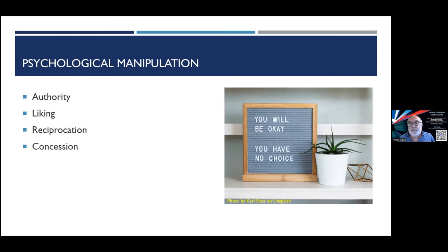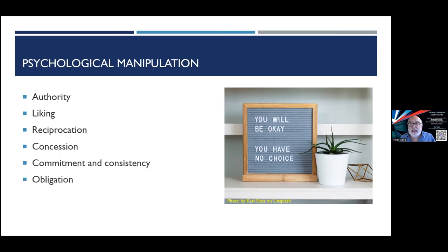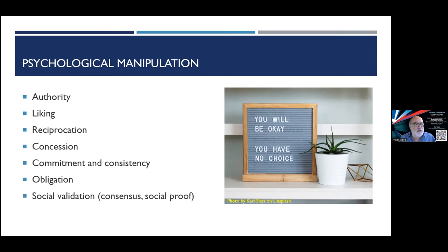Concession works the other way: 'If you do this for me, I'll do this for you.' Commitment and consistency: once you've committed to doing something, you'll follow through — like changing your password every 12 weeks. Obligation is similar — you're obliged because someone told you to. Social validation is where all your friends, business associates, or influencers seem to be doing something. And finally, scarcity — 'If you don't buy it now, you'll never get it.'